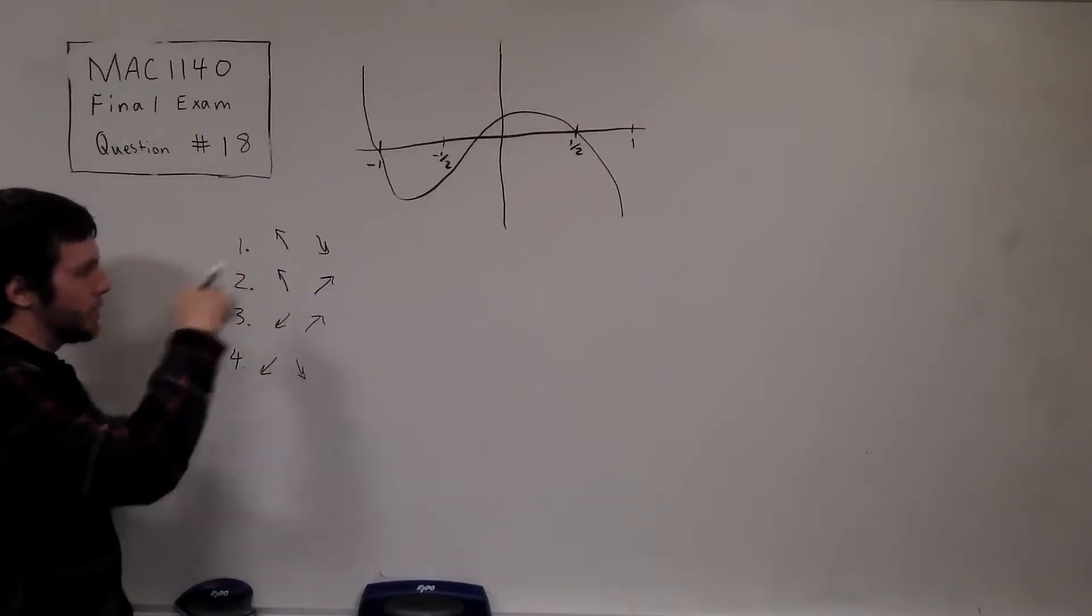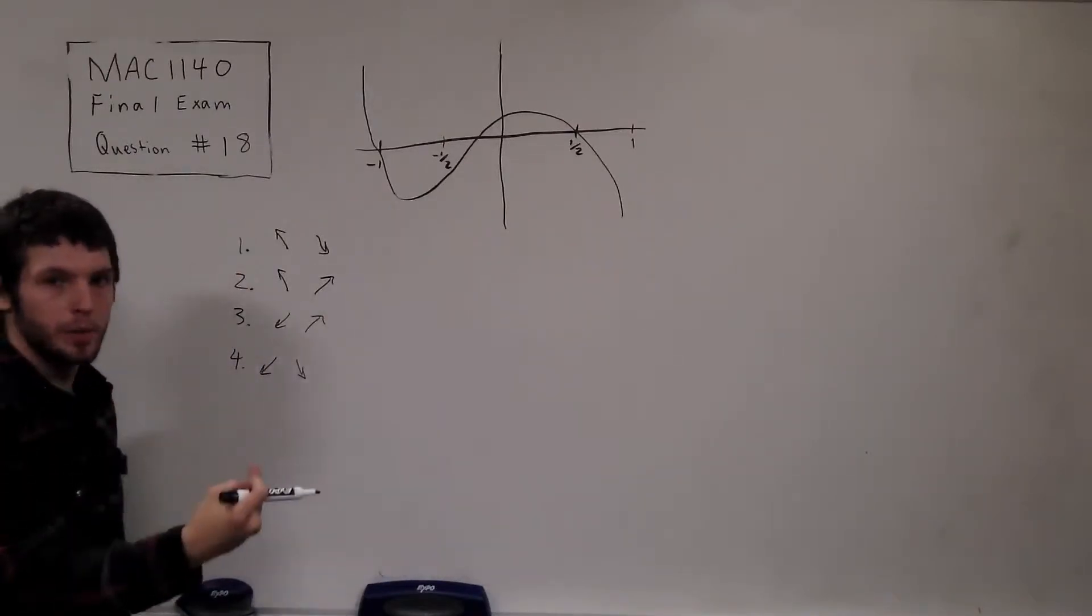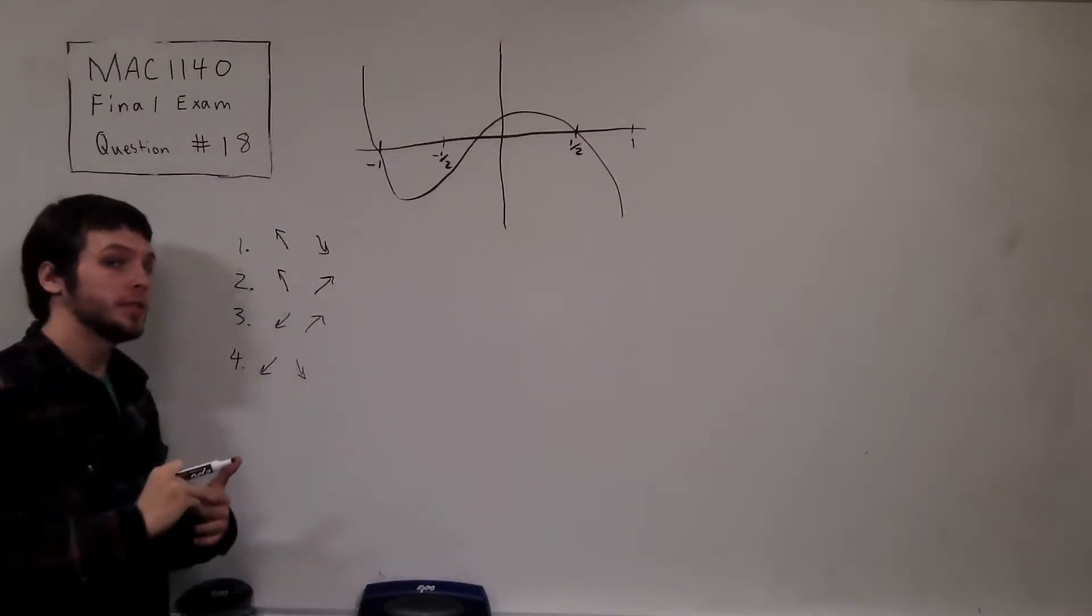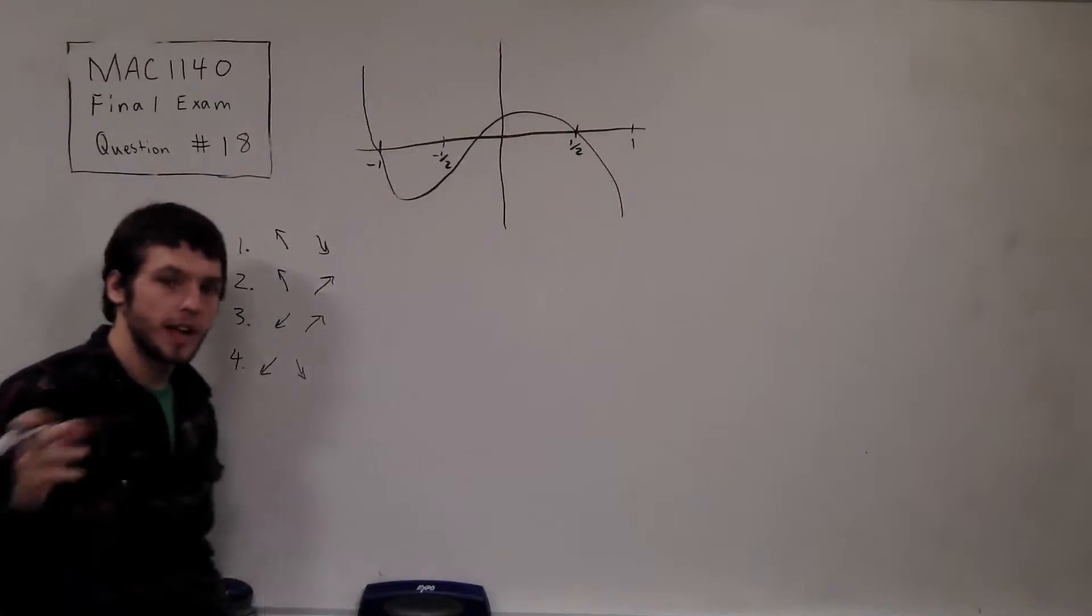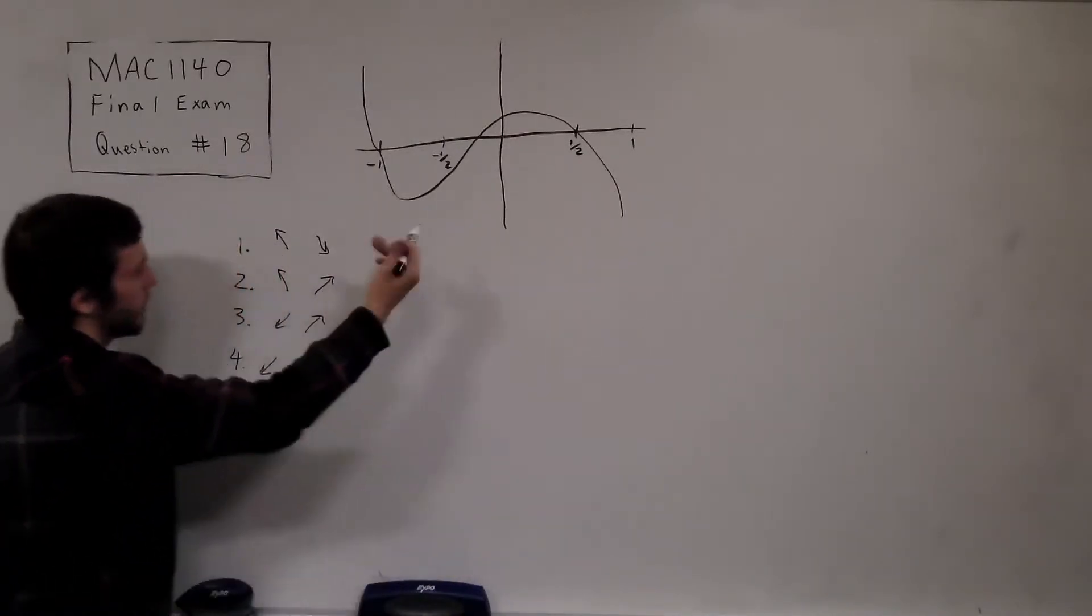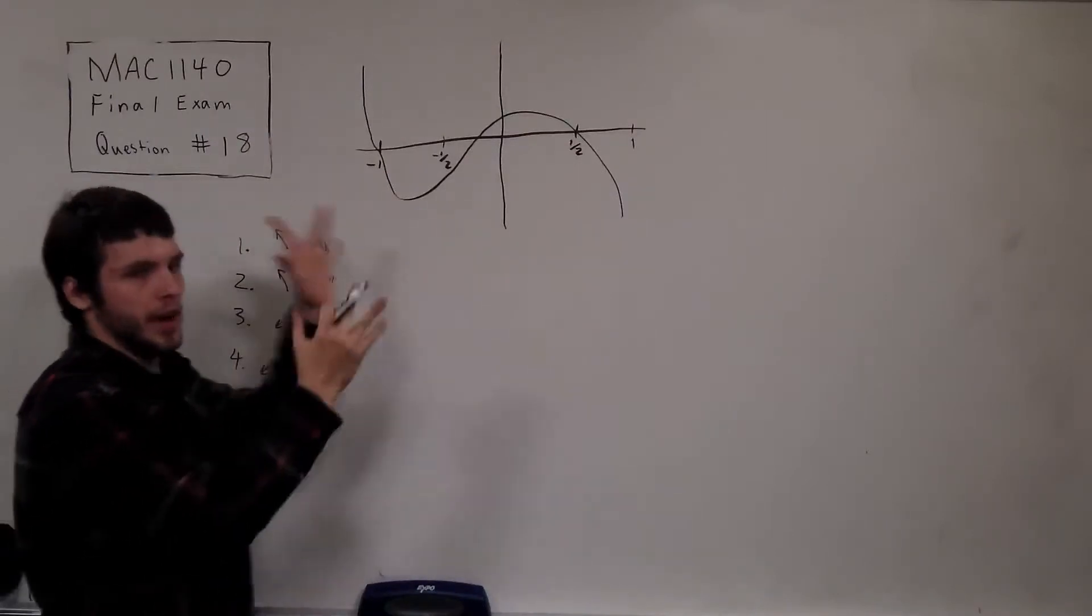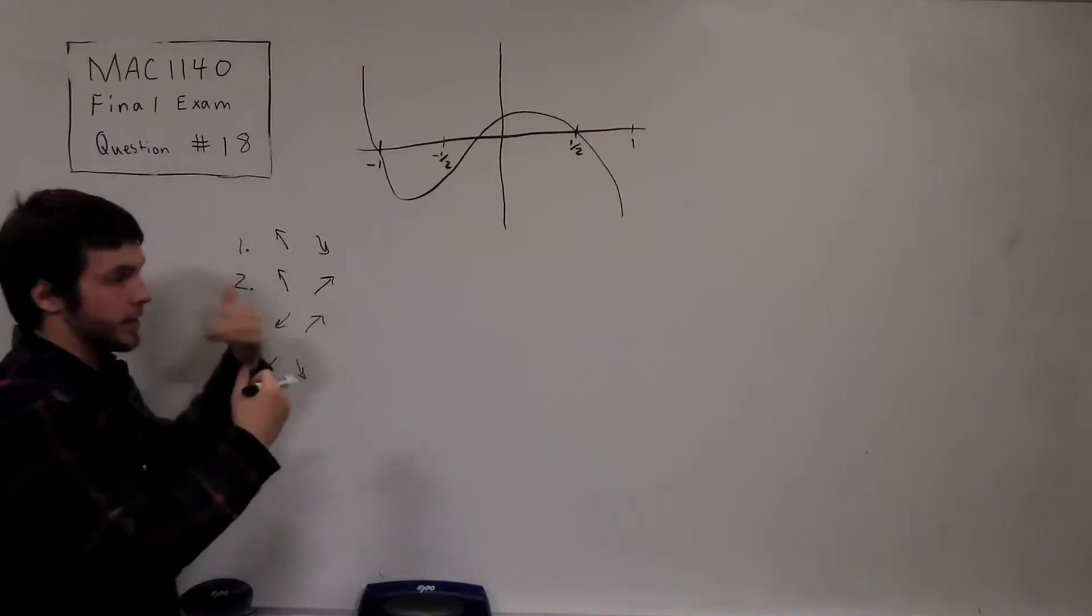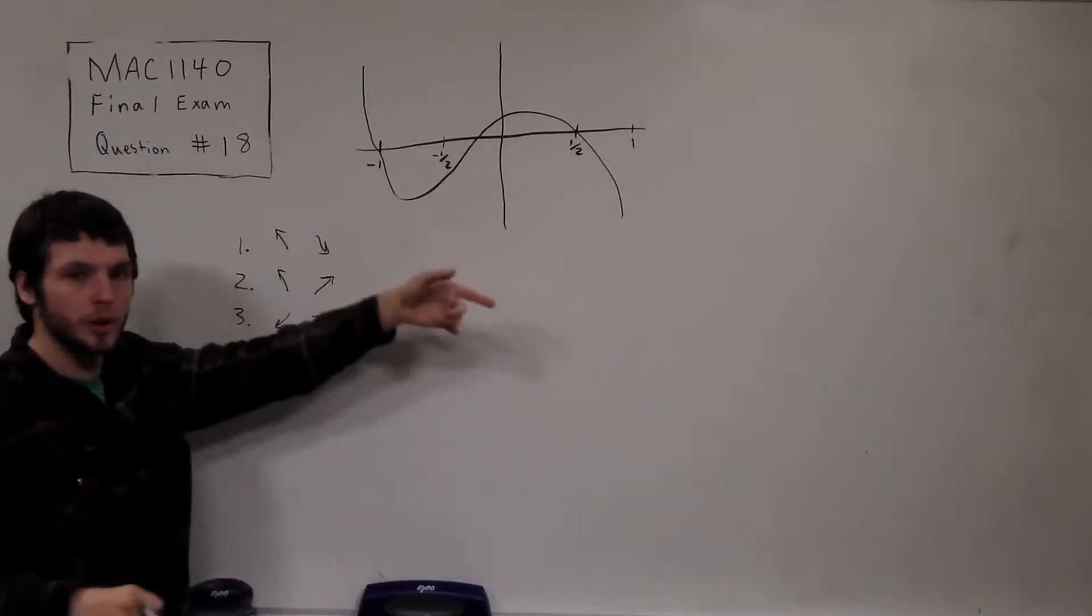Anyways, what you can get from the end behavior is the degree of the polynomial, or not the degree but whether the degree is odd or even, and also the sign of the leading coefficient. So whether the leading coefficient is positive or negative. So the first thing you want to notice, are the two ends doing the same thing? If they're not, like right here, we have one end going up, one end going down.